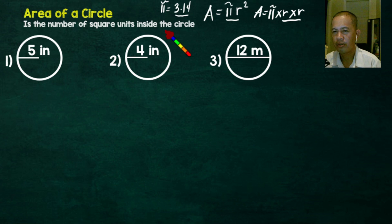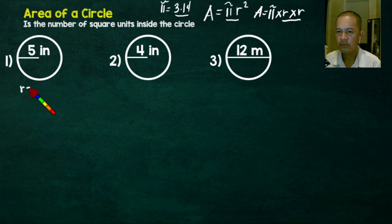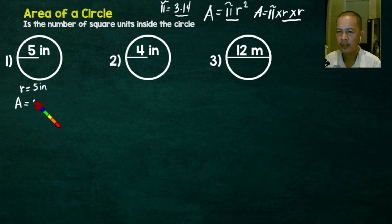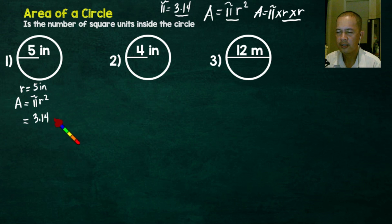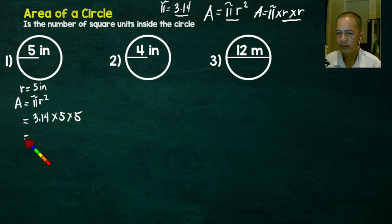Let's begin with question number one. We have 5 inches, so 5 inches is the radius of our circle — the radius is equal to 5 inches. First, we write the formula: area is equal to pi r squared, which is 3.14 times r, which is 5, times 5. We multiply 5 times 5 and we get 25.